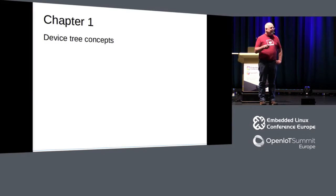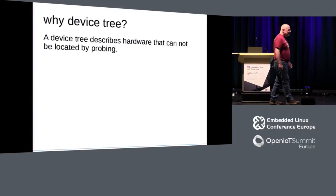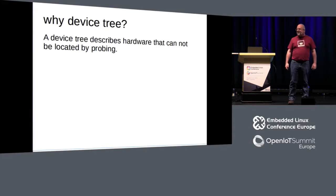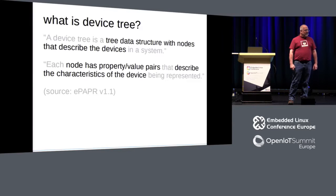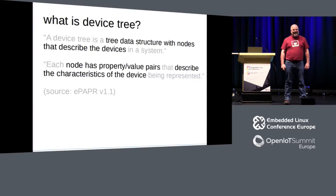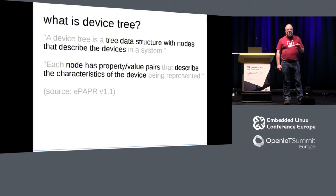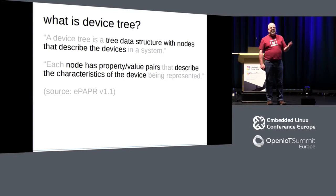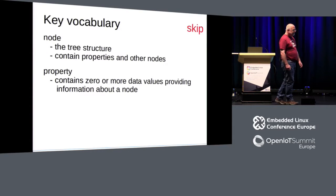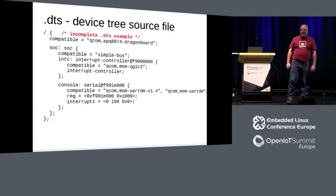First, why have a device tree? The point of a device tree is to describe hardware you cannot autoprobe. And by its name, you can guess it's going to be a tree — the nodes of the tree are the actual devices. A node can contain other devices, and a node can also contain properties. Think of a property, conceptually, as being a static variable with some value, which then gets fed into the system.